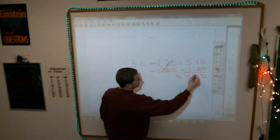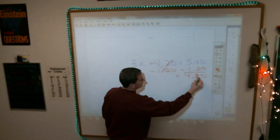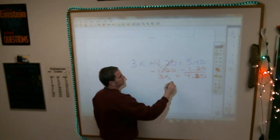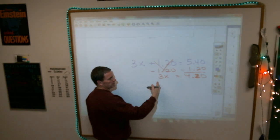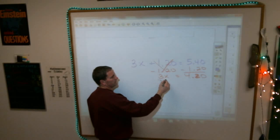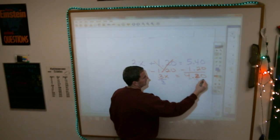I get 4.20 equals 3x. And then once I have that, the inverse operation of multiplication, division, divide by 3, divide by 3.